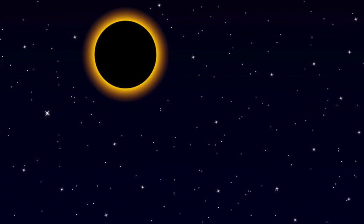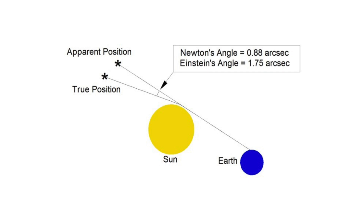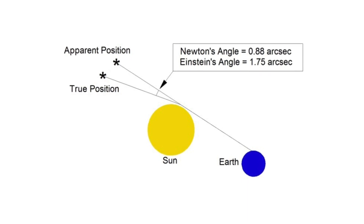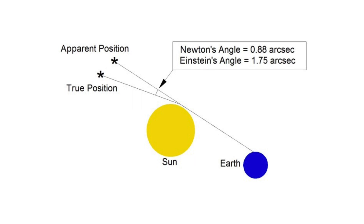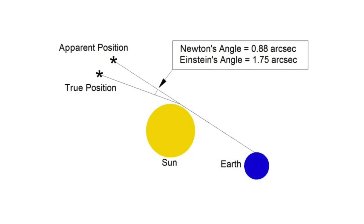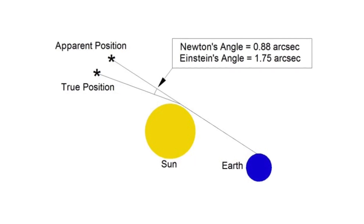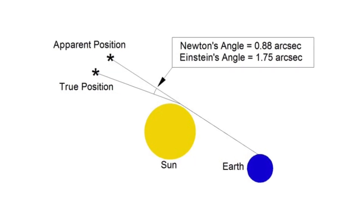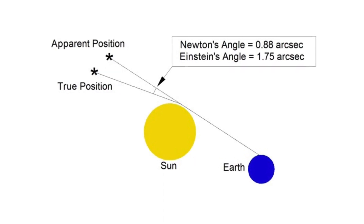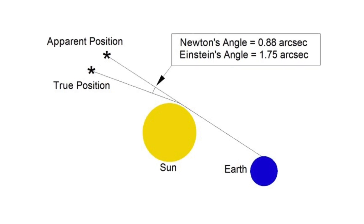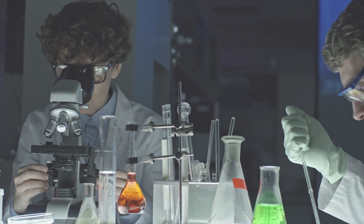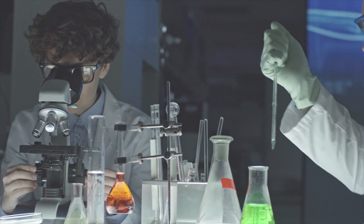Starlight passing close to the sun will be bent by the gravity of the sun. Eddington's experiment set Newton's theory, which said the starlight would be bent by X amount, against Einstein's, which said Y amount. The experiment ruled in favour of Einstein's.